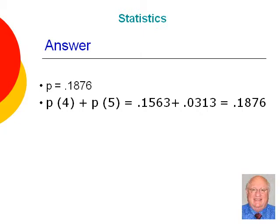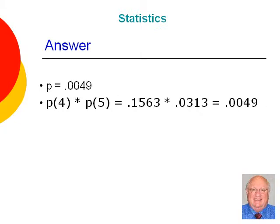What is the probability of flipping four heads out of five and then flipping five out of five? The answer is p equals 0.0049. Here we would use the multiplicative rule and multiply the probabilities for four and five.